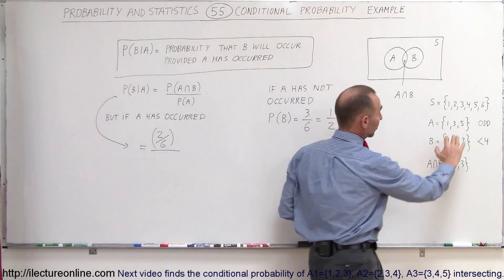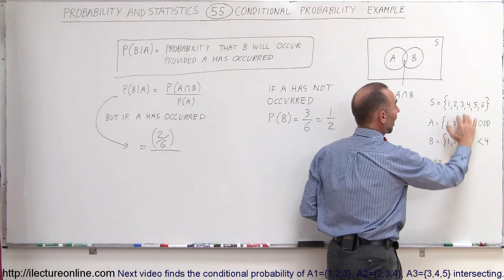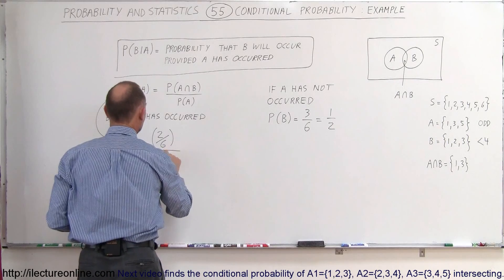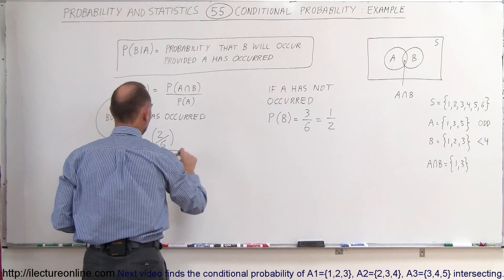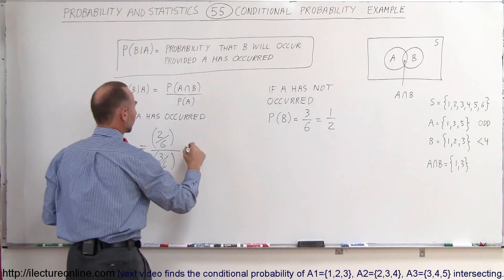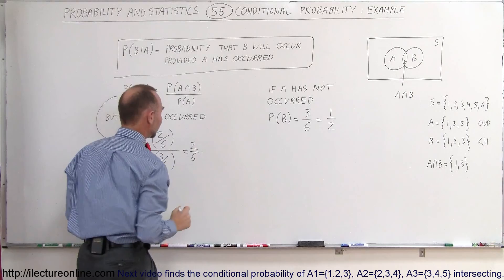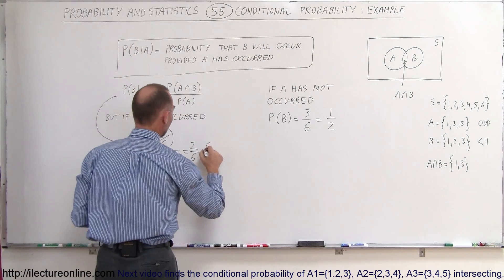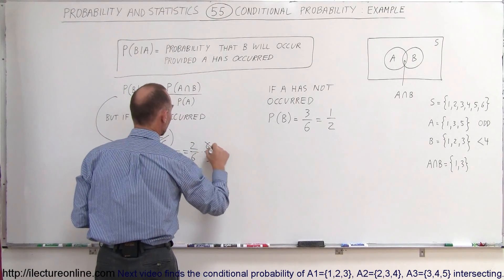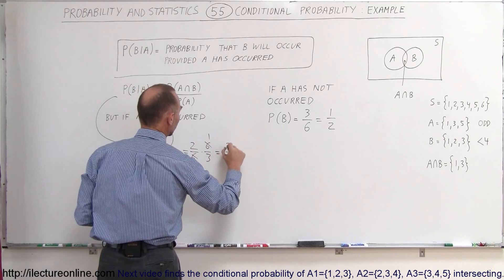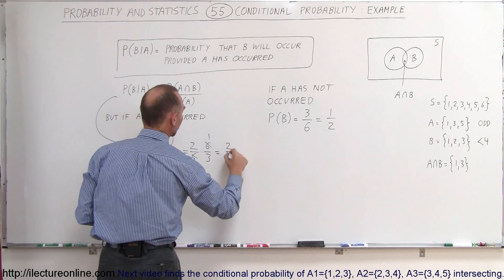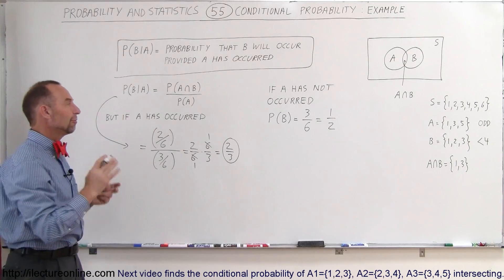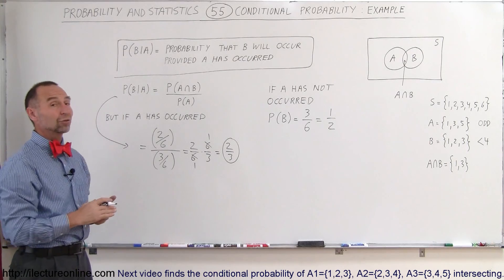And we divide that by the probability of A. The probability of A is 3 outcomes out of a total of 6, so we divide by 3/6. Now, 2/6 divided by 3/6 is the same as multiplying by the inverse, giving us 2 times 6 over 6 times 3. The 6 cancels out, and we get 2/3, which is the probability that B will occur provided that A has occurred.